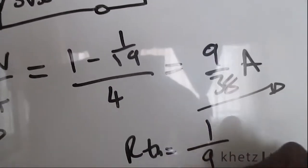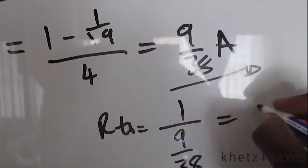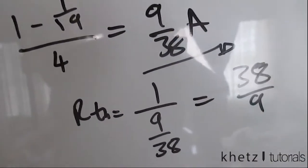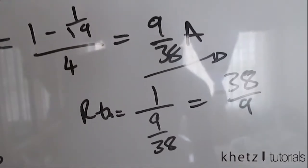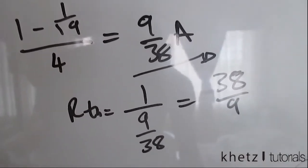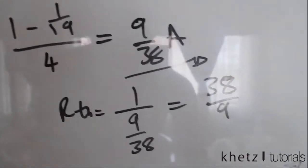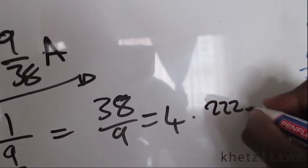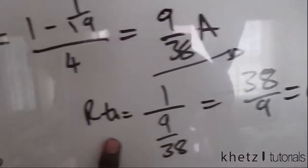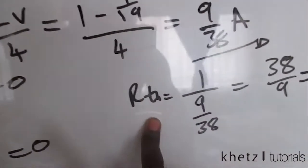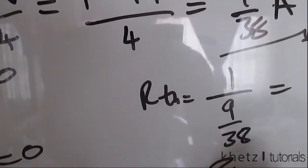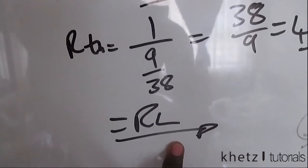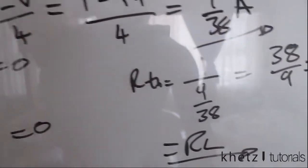Finding R_th: R_th equals 1 divided by I_o, which is 1 divided by (9/38), giving 38/9. Punching that into the calculator: 38 divided by 9 equals 4.222 ohms. That is R_th, and since R_L equals R_th for maximum power, R_L equals 4.222 ohms.